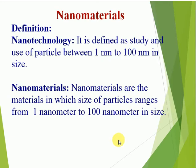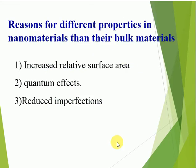Nano materials are materials in which the size of particles ranges from 1 nanometer to 100 nanometers. The reason for different properties in nano materials compared to their bulk materials: first, increased relative surface area. Bulk materials are materials present in a crystal, and crystals are always in a cubic form. Nano materials, having small size, have an extremely large surface area, while bulk materials have less surface area. For example, metallic nano particles are used as active catalysts.